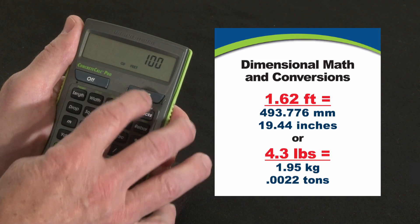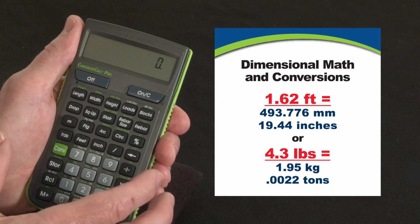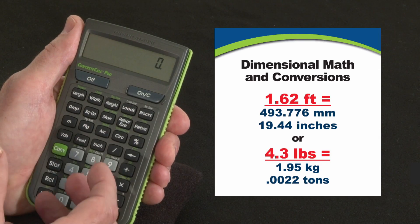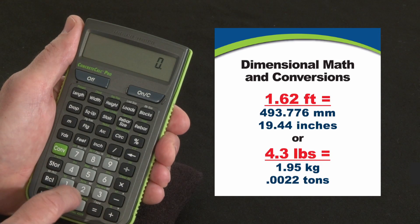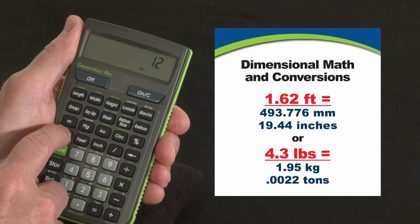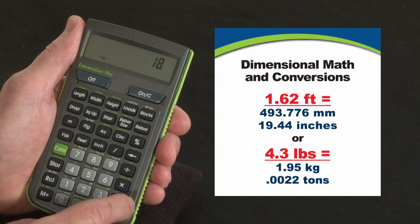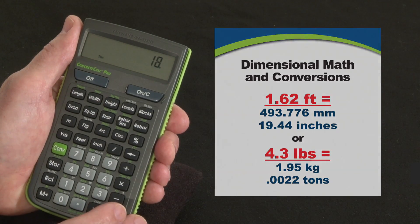There's also a weight per volume function that allows you to convert volumes of concrete, sand, or gravel to weight depending on their density. The default setting is 1.5 tons per cubic yard. Say you've got 12 cubic yards and want to convert that to tons — that's 18 tons — a quick calculation for weights, loads, and logistical issues.